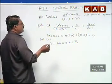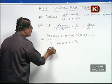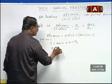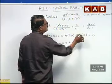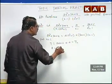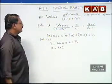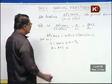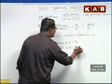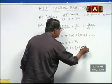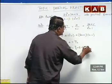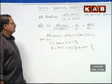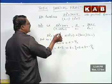Next, equating the coefficients of x square on both sides. On the left side, coefficient of x square equals 2. On the right side, from A into x square we get A, and from Bx into x we get Bx square, so coefficient of x square is A plus B. Now A plus B equals to 2. Substituting A equals to 9 by 2, we get B equals to 2 minus 9 by 2, which equals minus 5 by 2.